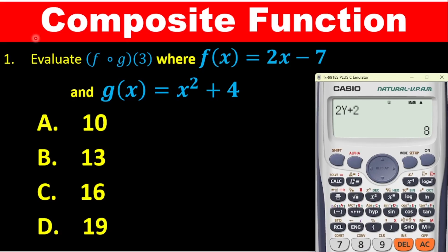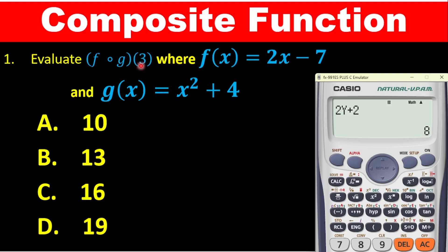The first question: evaluate f of g of 3, where f of x is equal to 2x minus 7 and g of x is equal to x squared plus 4. We want to enter this on the calculator. The key thing you need to understand is that you will always have to enter the function that is closest to the number you are looking for. Here, the function closest is g, so we must enter g of x first.